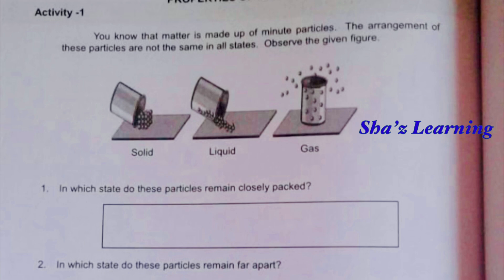We are also learning about Plasma, Bose-Einstein Condensate, and Fermi-Onic Condensate. These states are different from the main three states.